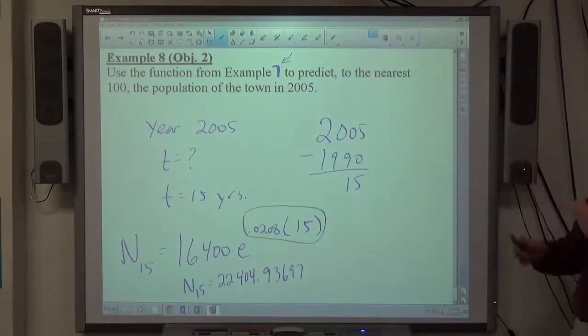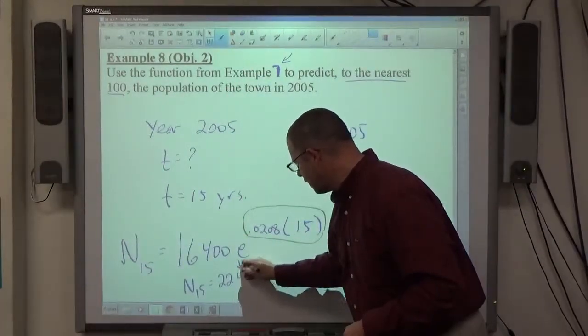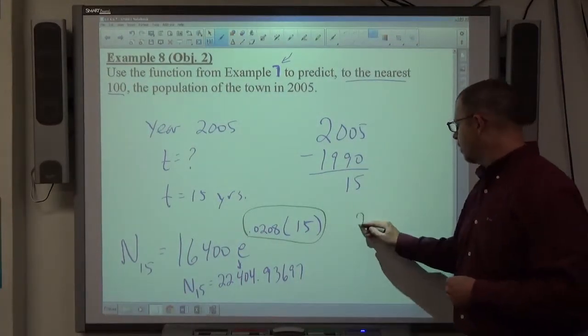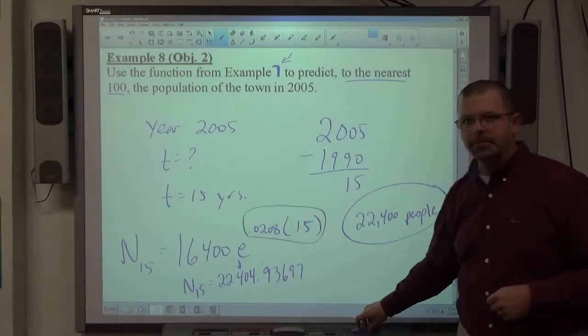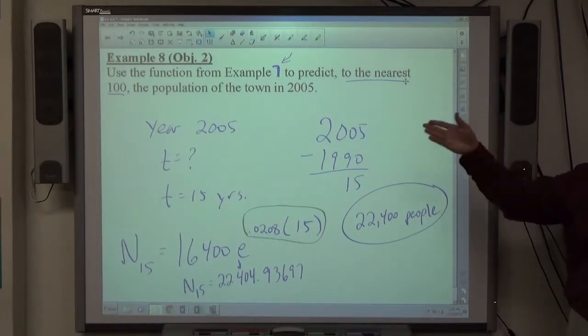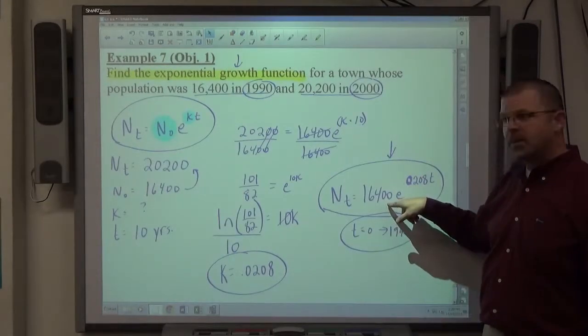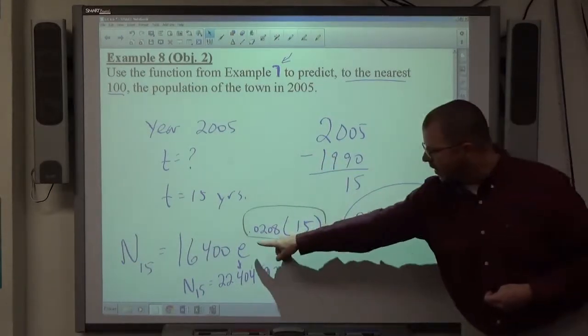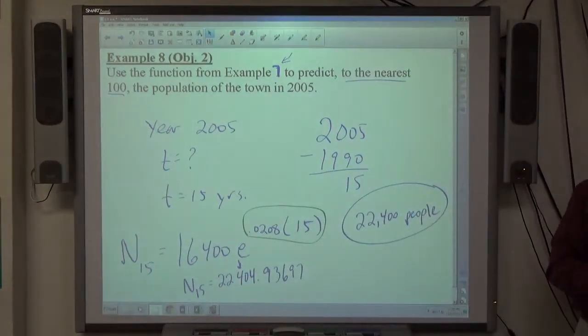Calculator's done, now I get to use my brain a little bit. But, it does say to the nearest hundred, so the hundred's place is right here, so we're going to chop off 4.93697 people, and we'll say the population in 2005 is 22,400 people. So again, for the sake of the test coming up next week, there's going to be a problem just like examples 7 and 8 put together. Part A is going to be find the exponential growth function, so you're looking for this, and then part B is going to say what's the population in this year, and then you've got to use that function correctly, figure out what t equals for the year zero you have, and then just substitute the numbers, and get your answer out that way.